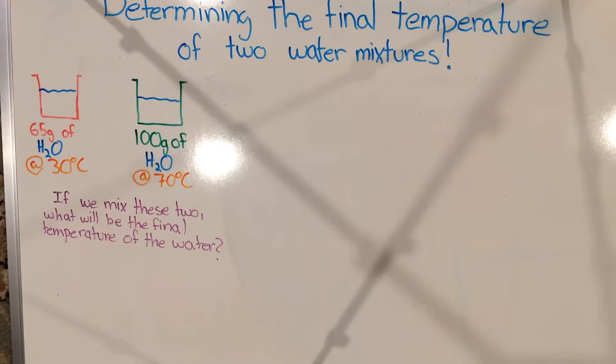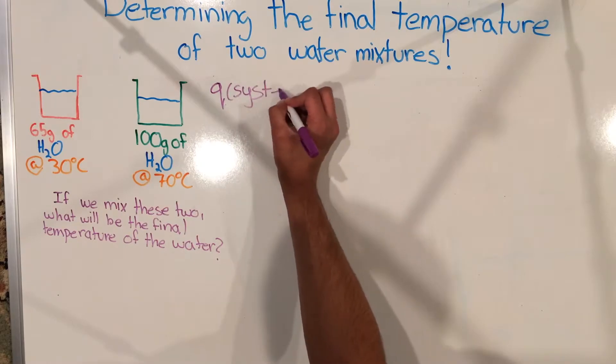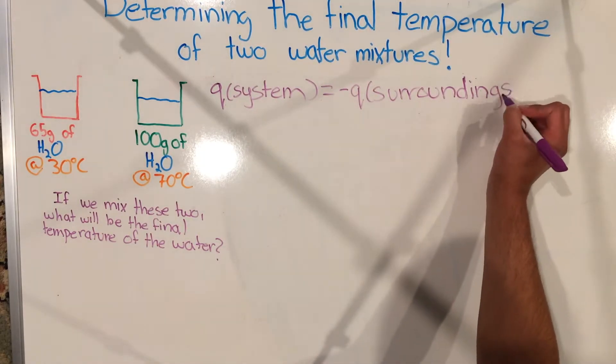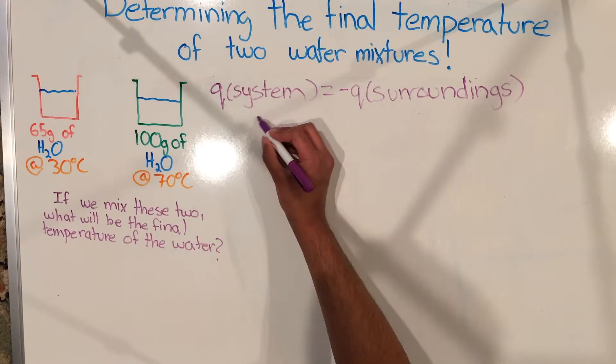One of which is that the heat of the system is equal and opposite to the heat of the surroundings. Now, what does this mean? This means that if you have a reaction going on in a bucket, and the reaction is releasing heat, this means that the reaction and the things that are reacting are becoming colder, whereas the surrounding air and the surrounding bucket is getting warmer.